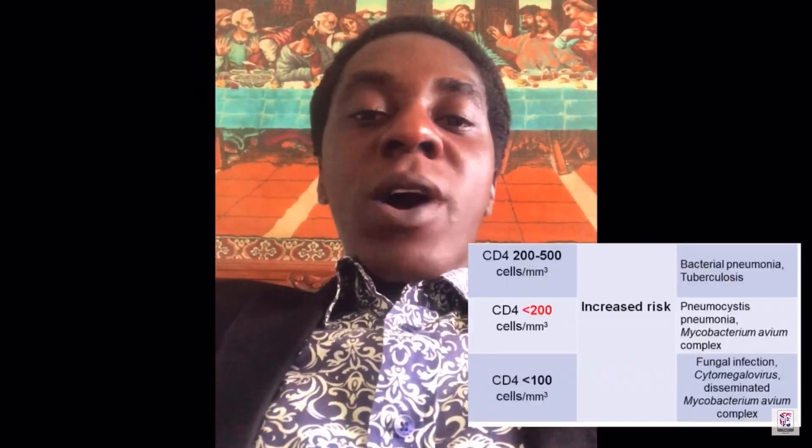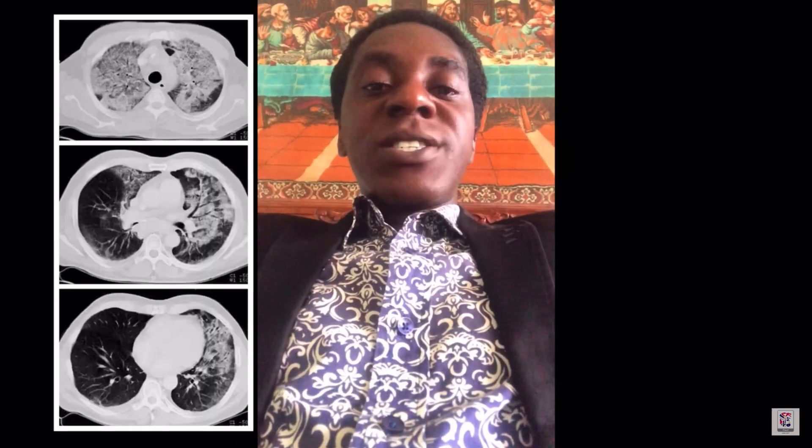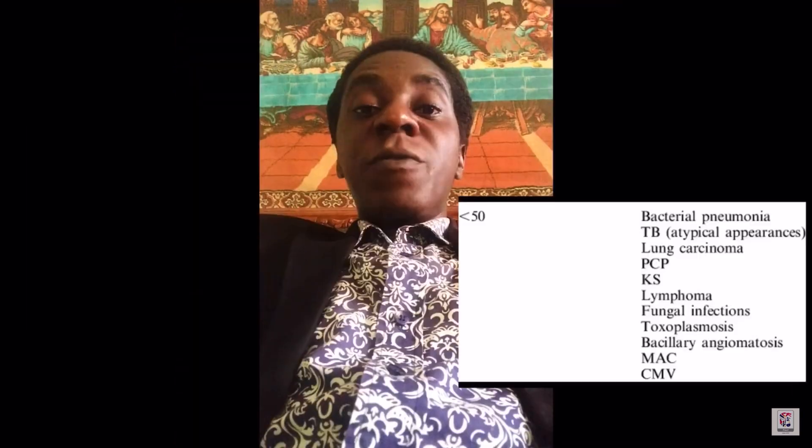Opportunistic diseases below 500 include oropharyngeal candidiasis and Kaposi's sarcoma. Below 200: esophageal candidiasis and Pneumocystis carinii pneumonia. Below 100: cerebral toxoplasmosis. Below 50: Mycobacterium avium complex. Mechanisms of HIV medications include maraviroc, enfuvirtide.